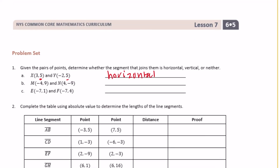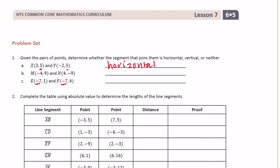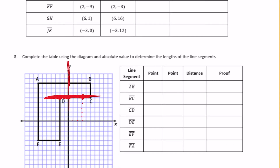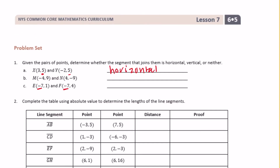Now if both of the x's are the same — so in example C, for example, both of the x's are the same. So wherever negative 7 is, it's going to be crossing at negative 7 no matter where they are. So it will be a vertical line, no matter where the y is.